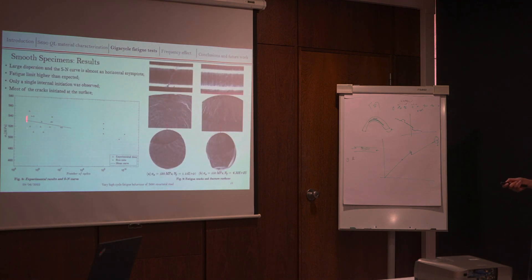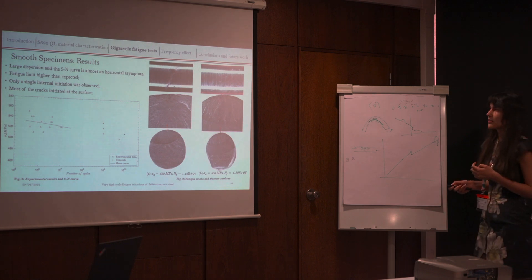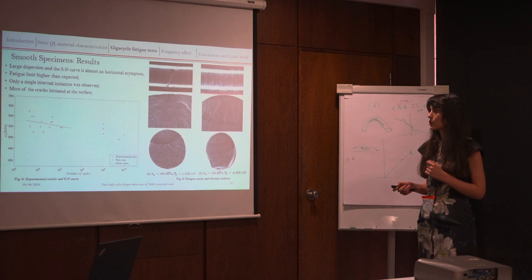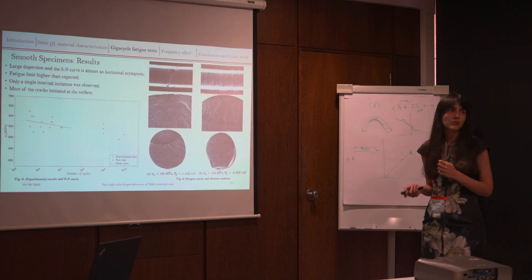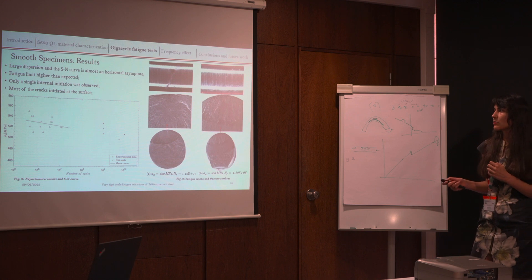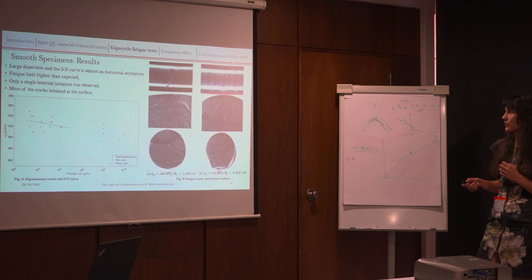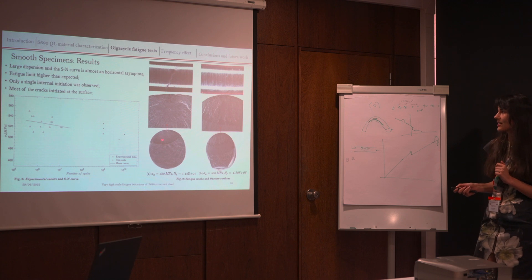And then we performed our experimental campaign. You can see here our data. We have a large scatter and a large dispersion. And as you can see here, for this kind of steel we have a very horizontal asymptote curve. In fact, one thing that I forgot to mention is that usually in very high cycle fatigue, we can observe some internal initiation. But in our case, most of the cracks were at the surface. As you can see here, we have a very typical surface for this kind of test that we perform. But in a single specimen, we observed here an internal defect where the crack started.